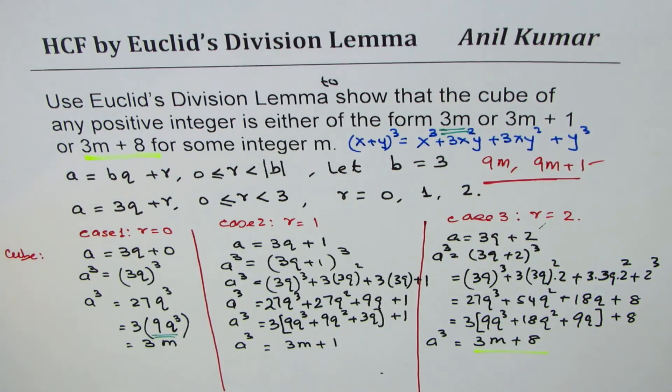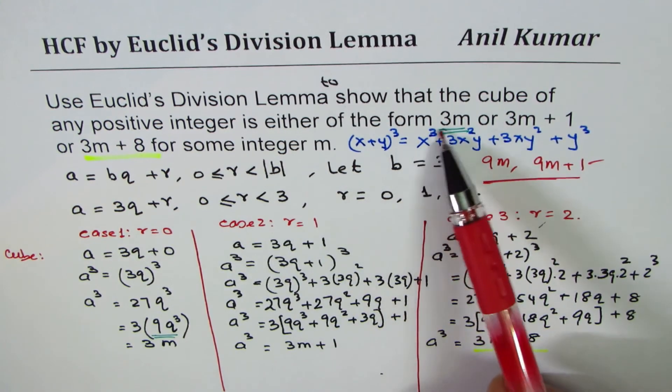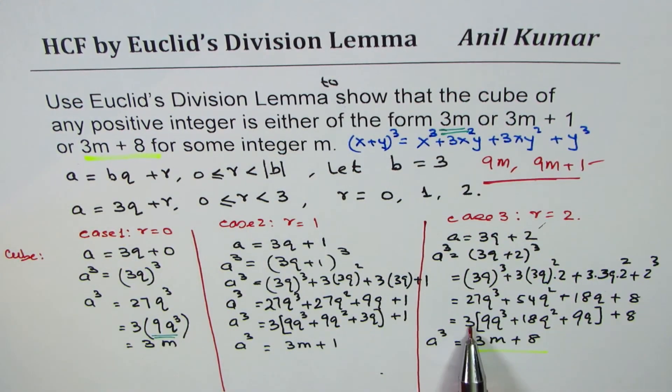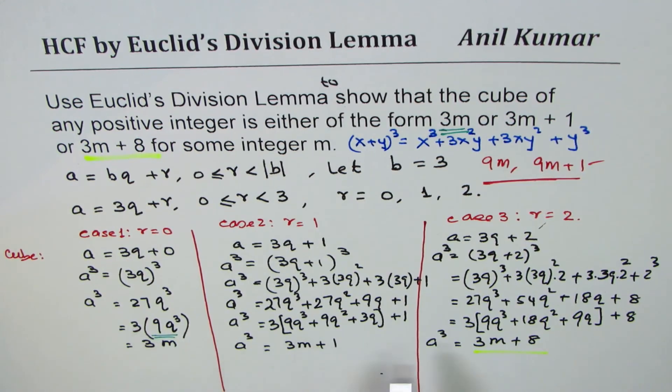These are only 3 possible combinations. So with the help of Euclid's division lemma, we have shown that the cube of any positive integer is either of the form 3M or 3M plus 1 or 3M plus 8. You could get in your test a question saying 9M or 9M plus 1 or 9M plus 8. In that case, take 9 as a common factor and show the result. I hope that's absolutely clear. Thanks for watching and all the best.